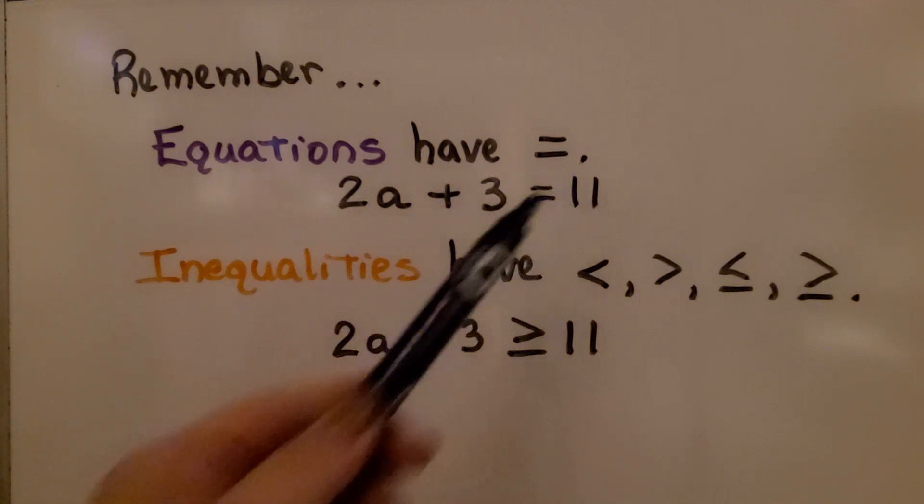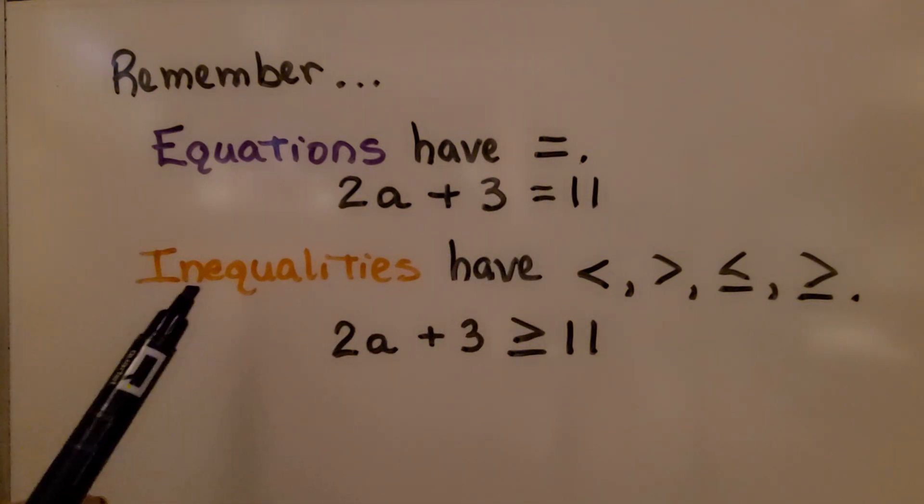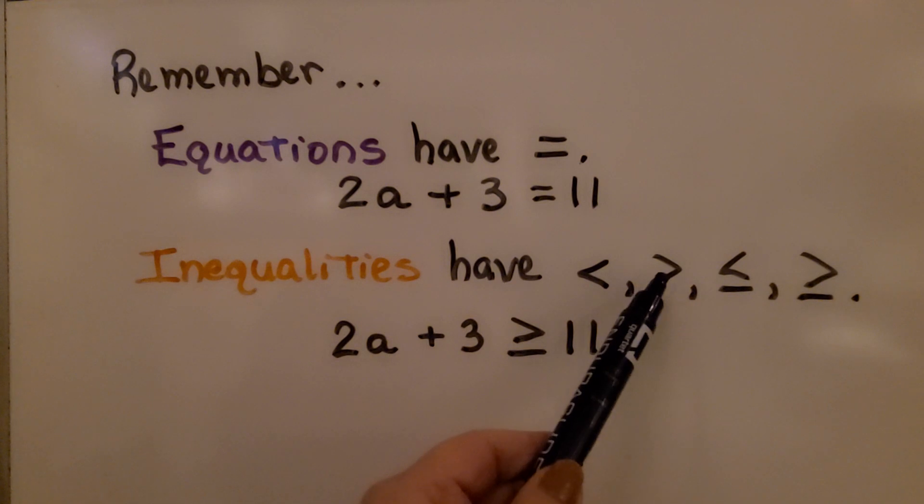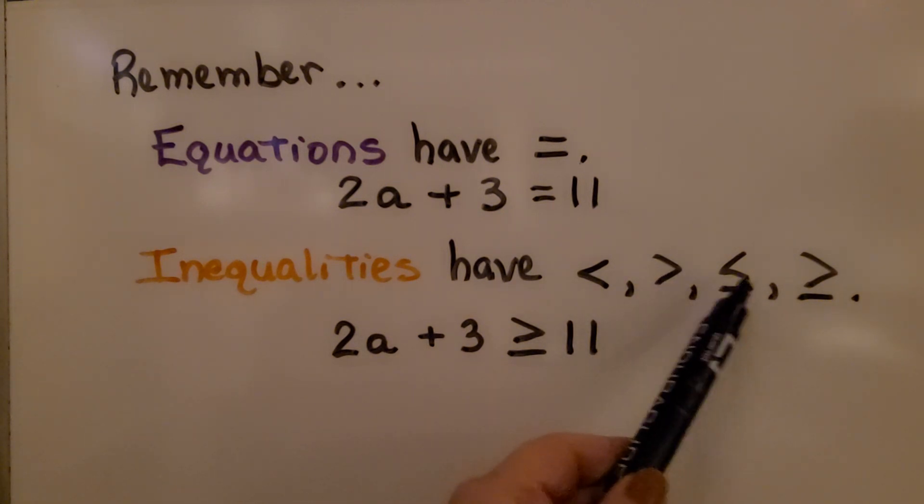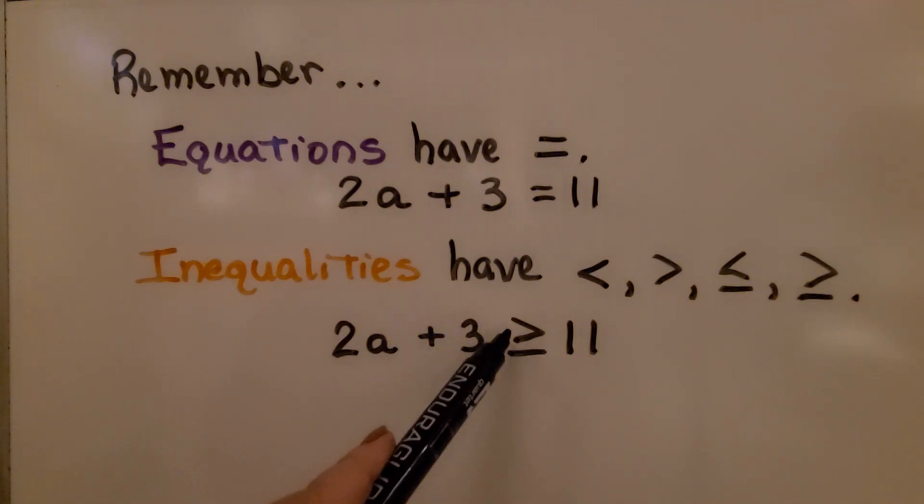2a plus 3 is equal to 11. Inequalities have a less than, greater than, less than or equal to, greater than equal to sign. 2a plus 3 is greater than or equal to 11.